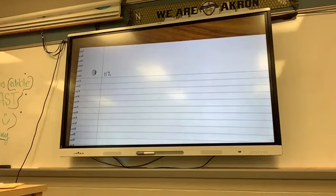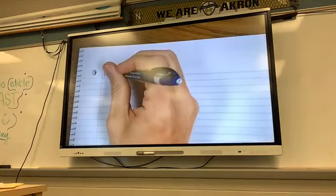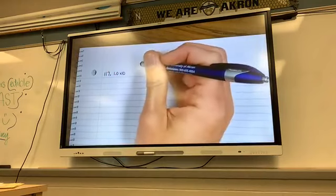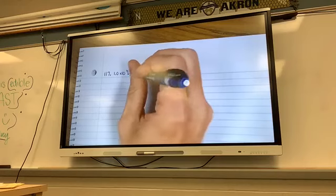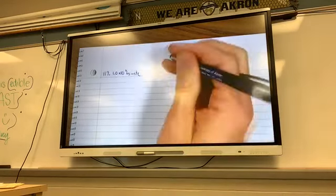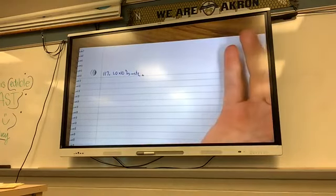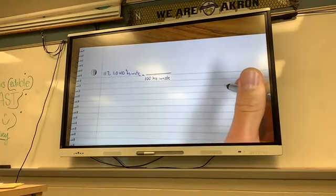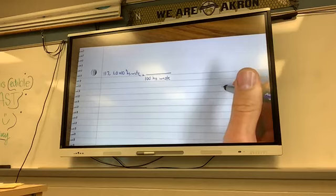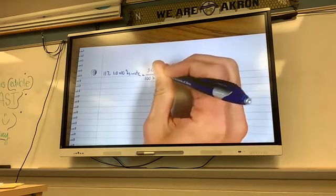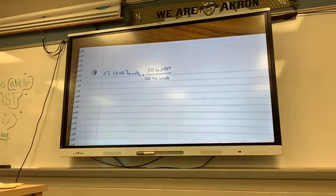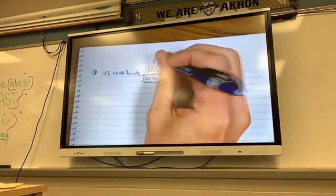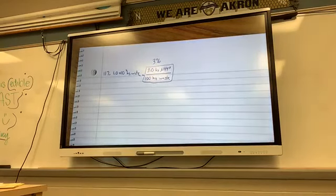What am I going to start with on 117? I started with the waste. So I'm going to start out with my 1.0 times 10 to the fourth kilograms of waste. First thing I'm going to do is say for every 100 kilograms of waste, what do I get? I get 3.0 kilograms of NH4 plus. Do you see what I just did there? That's the 3%.